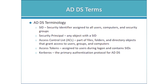A security principle is just another term for any object with a SID — a user account, a security group, a computer account. Now the ACL's full name is actually DACL — discretionary access control list. Sometimes people pronounce it DACL. It's a part of a file and folder as well as directory objects, and it's the part that grants access to users, groups, and computers. This is where authorization comes from — the individual access control entries that either grant or deny access to a particular user or group.